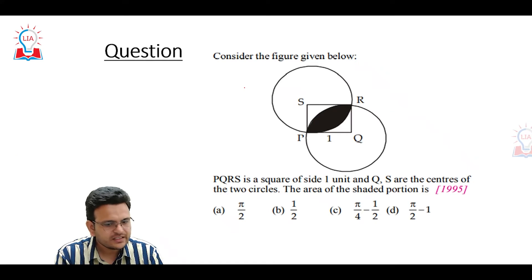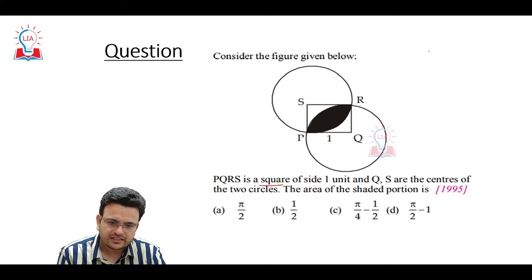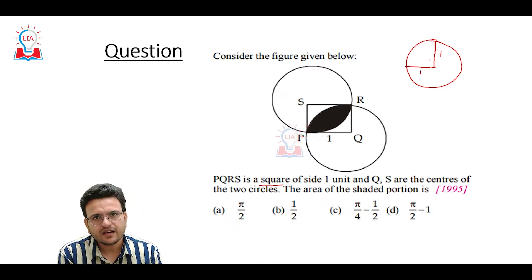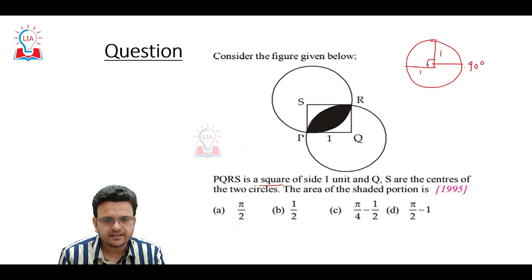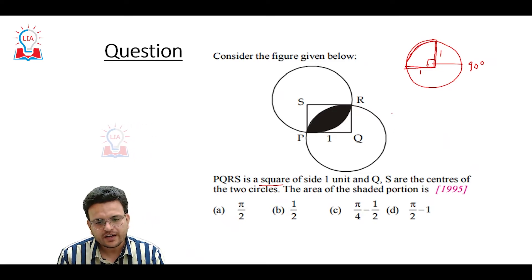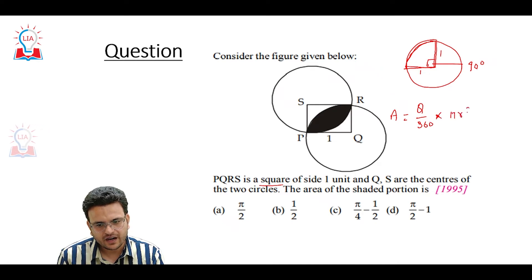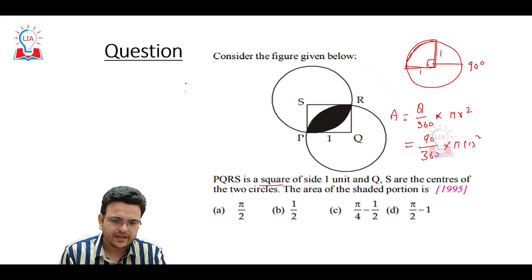Let's see some questions — I suggest you first pause the video and try to solve it. Here we have two circles joined together with a square in between. Consider one circle with radius 1 cm. The square has a 90-degree angle. The area of this region is θ/360 × πr². With θ = 90 and r = 1, it becomes π/4.